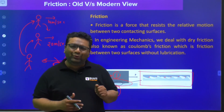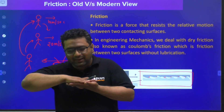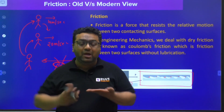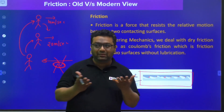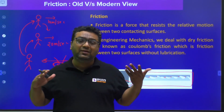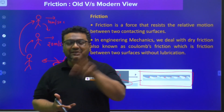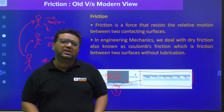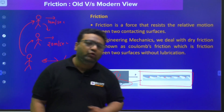The second challenge was: if friction comes from irregularities, then two very smooth surfaces — like two glass plates placed one over the other — should have very little friction. But in reality, it is very difficult to move them; the friction is very high. According to the old theory, friction should not be there because the surfaces are flat and smooth. This was the second challenge to the old view, and so people began thinking about a new explanation.